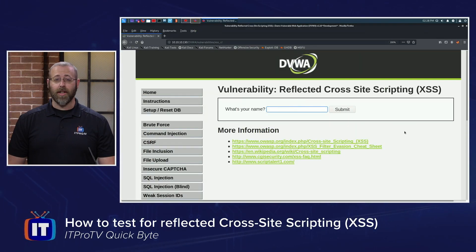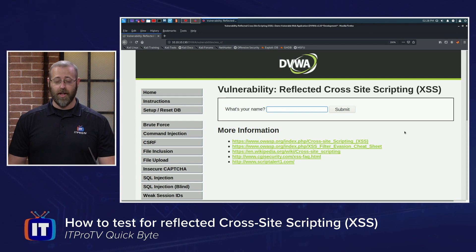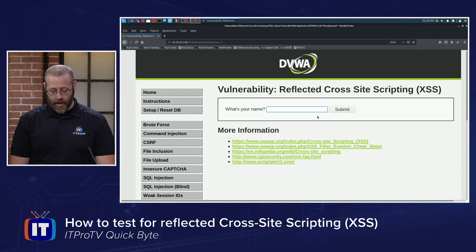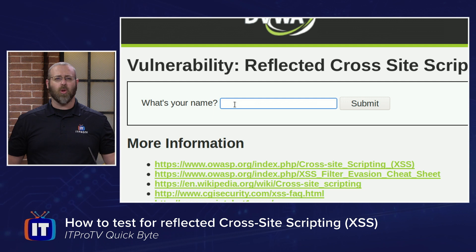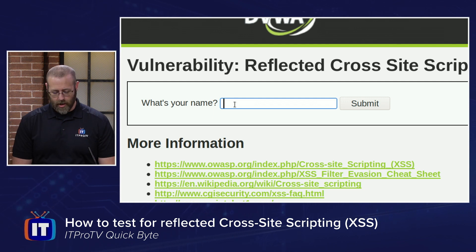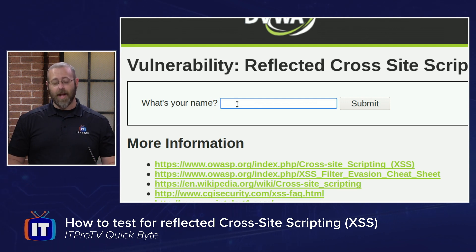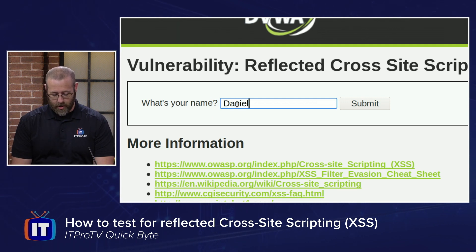All right, first things first, we need to find a vulnerable area — or possibly vulnerable area. I've got my web application here, and it's asking me for my username, or what your name is. If it reflects that information back to me, I might actually have an area.